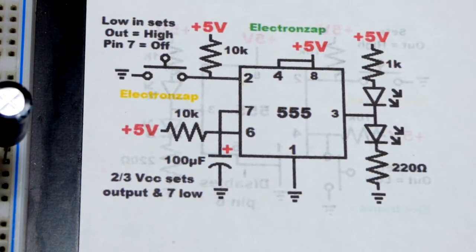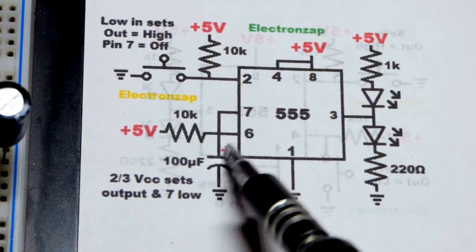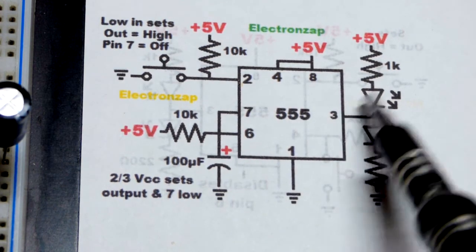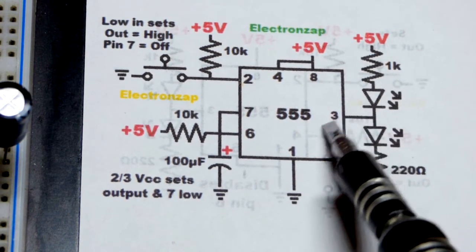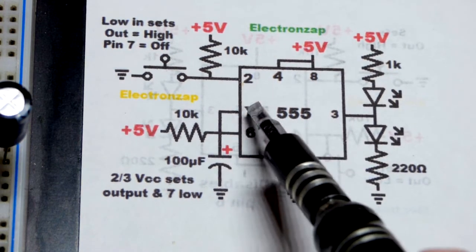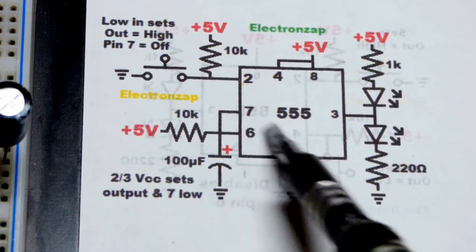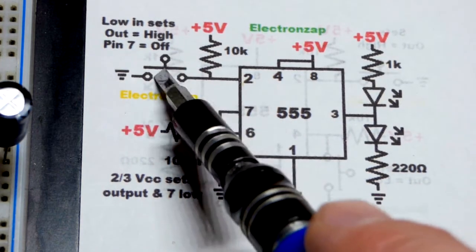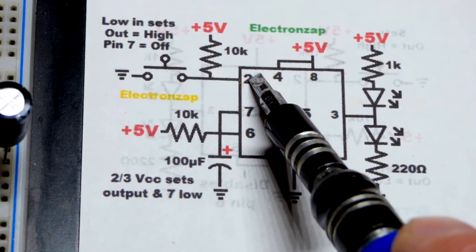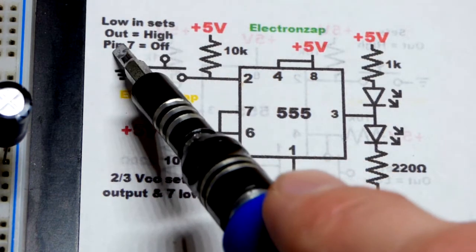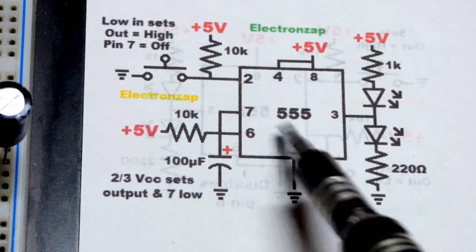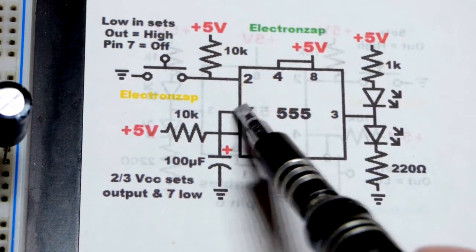For the timing, we have a capacitor. Now, pin number 7, when the output is low, so the blue LED is lit up, that means it's connected pretty much directly to ground right there. Same thing with pin number 7. It's connected pretty much directly to ground. When we give a low signal to the input there, it sets the output high and turns pin 7 off. So pin 7 just stops conducting. It's like a switch that you turn off.